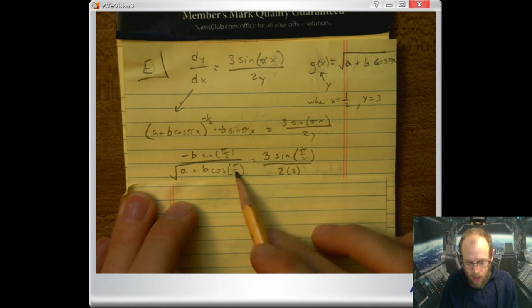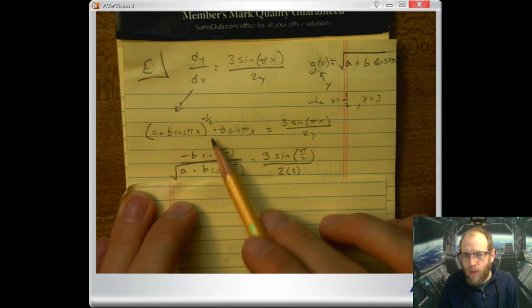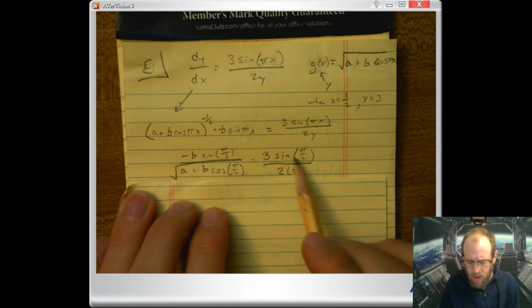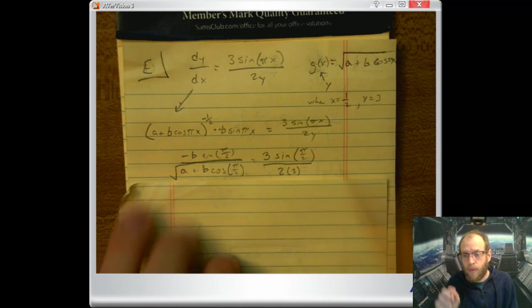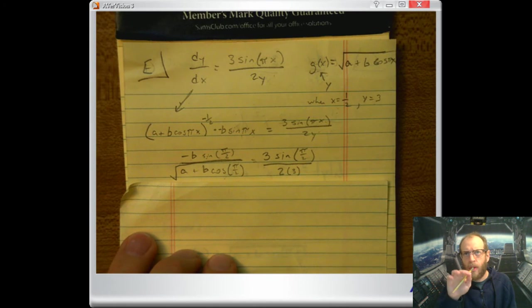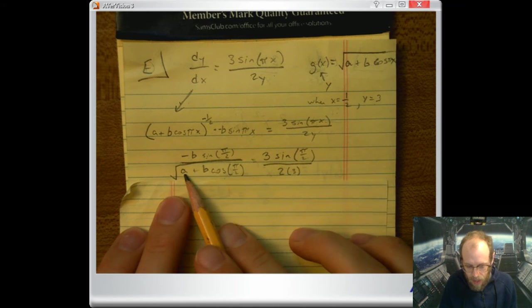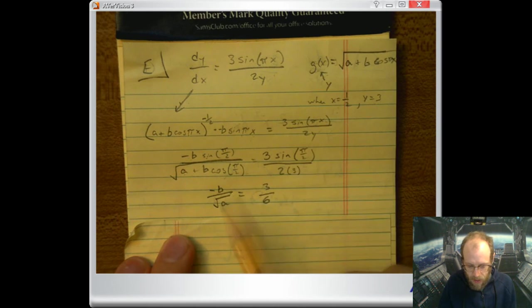What's sine of π over 2? 1, that's right. What's cosine of π over 2? 0. So on this side I'm gonna get negative b times 1, a plus nothing. And on this side 3 times 1 and 2 times 36 like that.